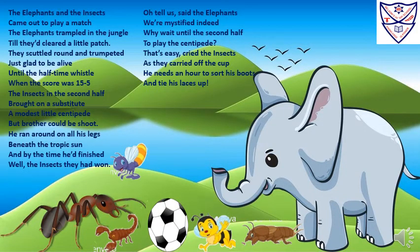Now I'll read the poem for you. Repeat after me. The elephants and the insects came out to play a match. The elephants trampled in the jungle till they cleared a little patch. They scuttled round and trumpeted, just glad to be alive, until the half-time whistle when the score was 15-5.